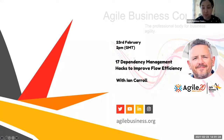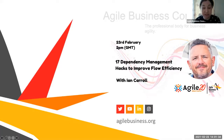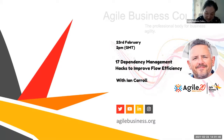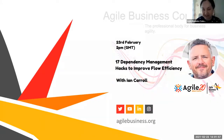Welcome. This talk is brought to you for the Agile Reflecting Festival and in collaboration with the Agile Business Consortium — the professional body for business agility, whose mission is to advance business agility worldwide. Today we've got a session with Ian Carroll, who's going to be talking about dependency management hacks to improve flow efficiency. Ian is a coach, trainer, and speaker on all things Kanban and agile software development. We're really pleased to have you here, Ian — thank you so much for your time.